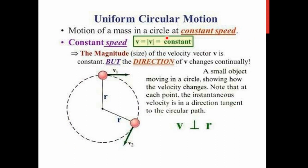Only with constant speed will it be uniform circular motion. As shown in the figure, a body performs uniform circular motion in a circular path with radius r. At any point, the velocity vector is directly perpendicular to the radius. This means at any instant, if the force is lost, the body will fly off tangentially — it will not continue circulating the path.